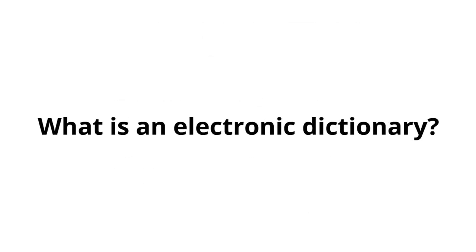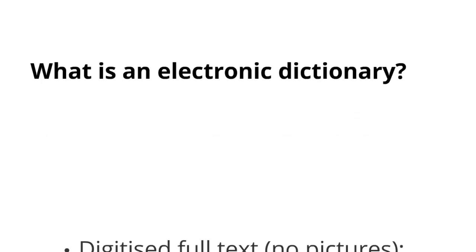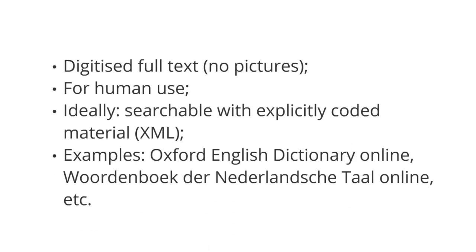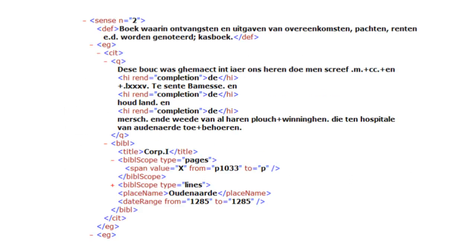Let's look at some types of different language resources, some of which you've probably already used. First off, we have an electronic dictionary that is designed for human use — in essence, a digital version of a standard dictionary such as the Oxford English Dictionary. Here is an extract from the underlying XML. You can see the different XML tags relating to each data element for this particular definition. For example, this is the definition for Sense 2 of the word, and this is the date range down here.